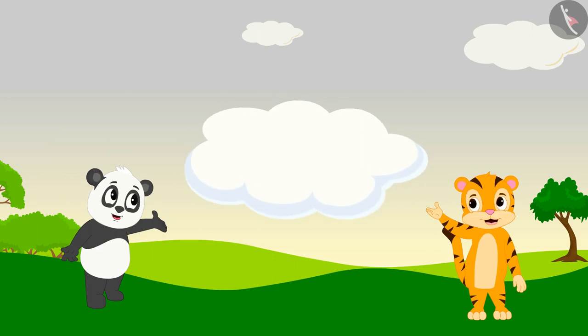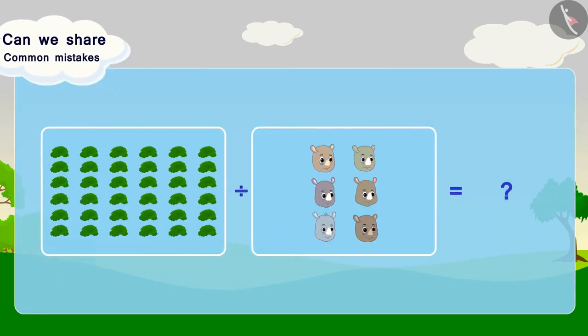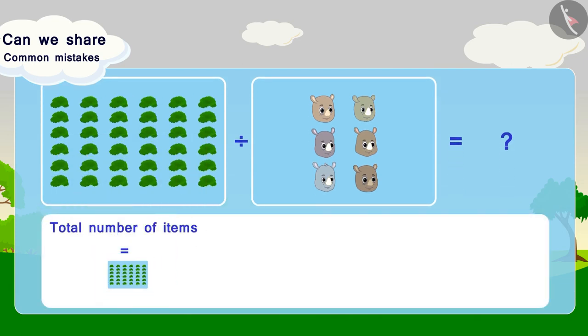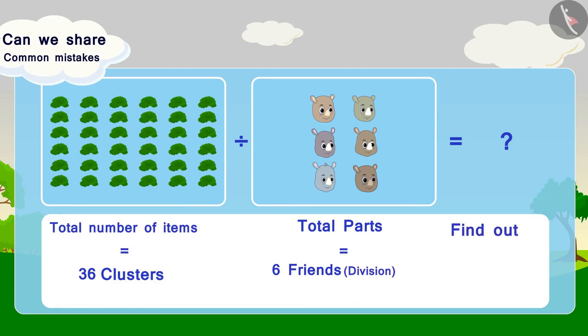Now, let's look at option 3. We can write this option like this: 36 clusters divided among 6 friends is equal to how many clusters per friend, per part? In this option, we have divided 36 clusters into 6 friends.